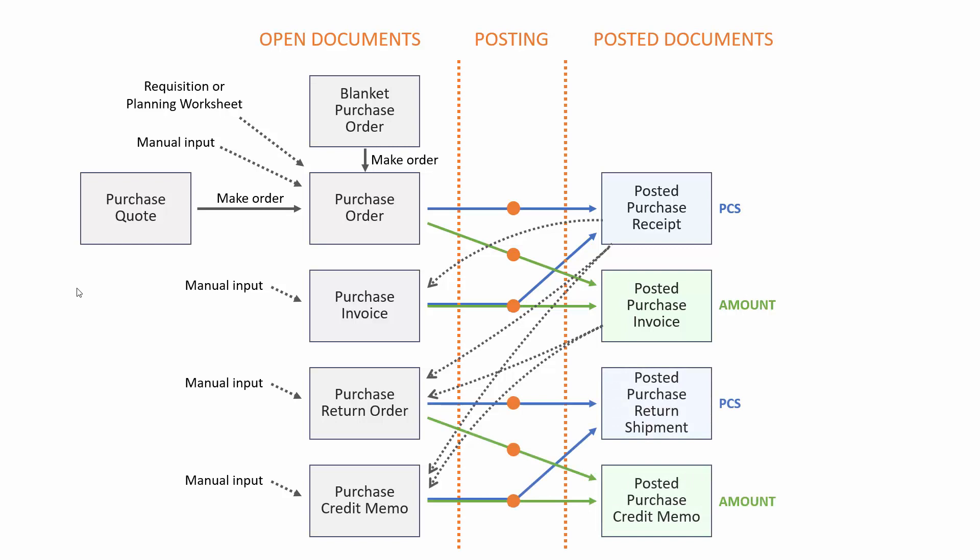As you can see here, the postings are separate from the return order, so often the return order is made as an agreement with the vendor and lies in the system until the warehouse people collect the items, pack them and then post the return shipment as a separate step. Later on, the finance department will post the purchase credit memo when they get it, whereas the credit memo is posted in one go.